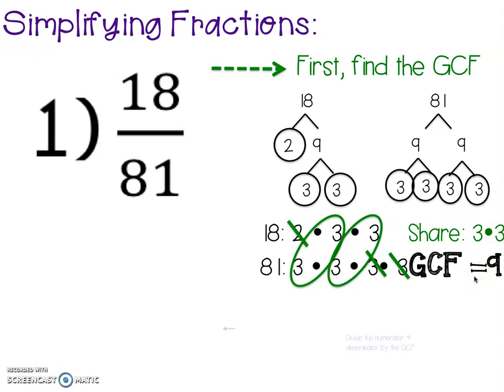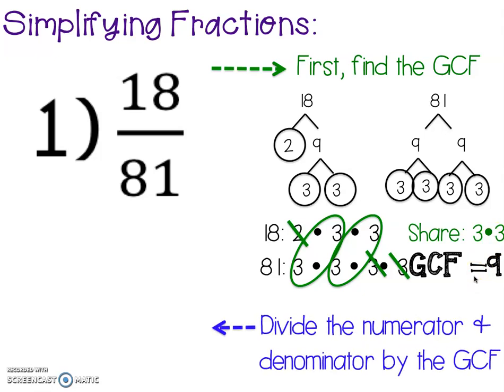We found the greatest common factor. Now we're going to divide the numerator and denominator by the GCF. This will simplify our fraction in one step. We found that our GCF was 9. So for 18 over 81,